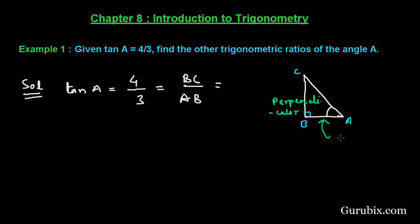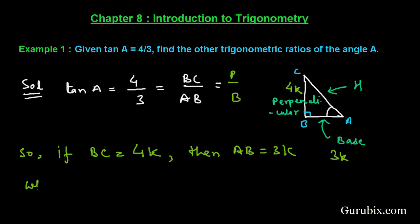We know that tan theta equals perpendicular upon base. So BC will be 4K and this side, base AB, will be 3K. If BC equals 4K, then AB equals 3K, where K is a positive number.